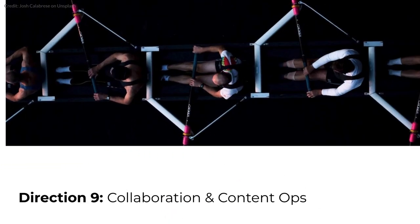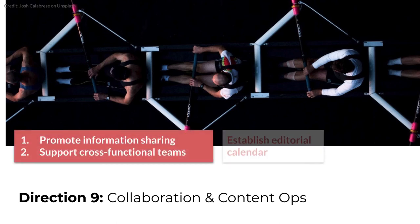The ninth direction for a content strategy based on maturity level is called collaboration. This characteristic focuses on the level at which an organization depends upon teamwork when publishing content. For organizations with lower maturity levels, strategy should focus first on ways content professionals can share information with each other, including the tactic of an editorial calendar. For organizations with higher maturity levels, strategy could involve cross-functional teamwork where content professionals are peers or leaders with teams from many different business units or product lines.